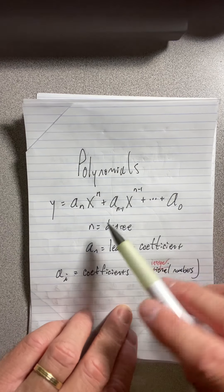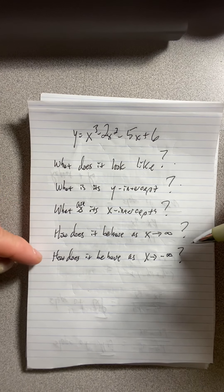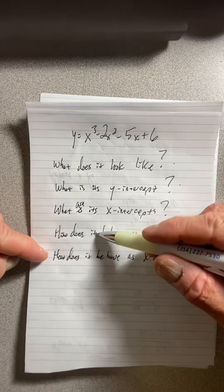We want to ask questions like, what does the graph look like? What is the y-intercept? What are its x-intercepts? How does it behave as x goes to infinity? As x gets really large, how does it behave? And how does the cubic, its graph, behave as x goes to negative infinity, as x gets really small?